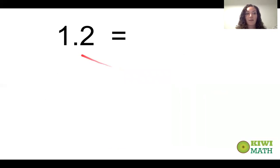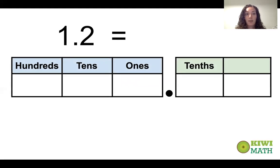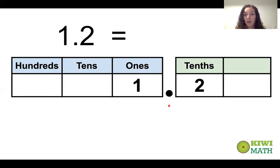What happens if we have more than one digit in the tenths place? Consider 1.2. Using our place value chart: the one is the first number to the left of the decimal point, so it goes in the ones place. The two is the first place after the decimal point, so it goes in the tenths place. The decimal point tells us to say 'and,' so we read 1.2 as one and two tenths.